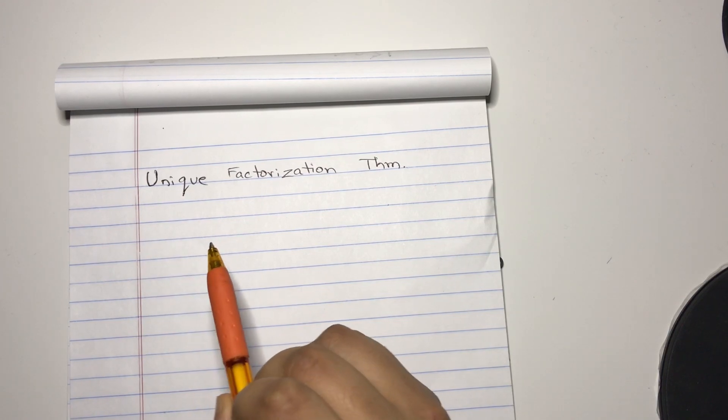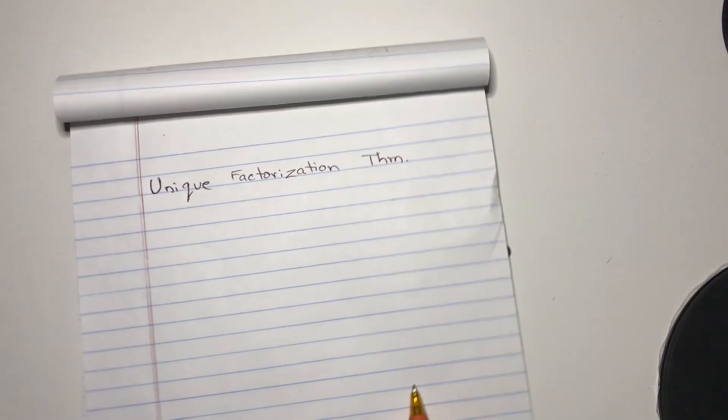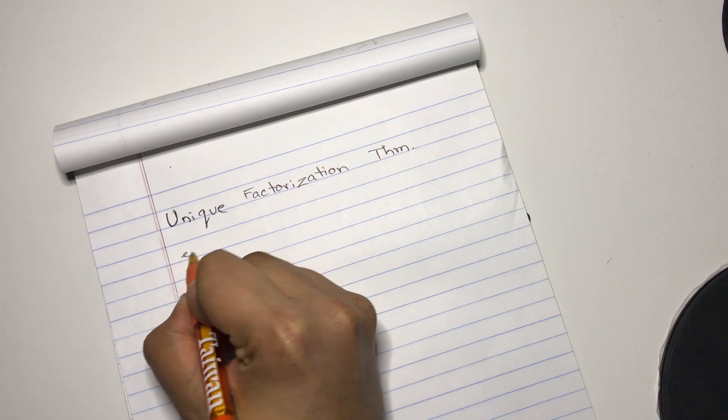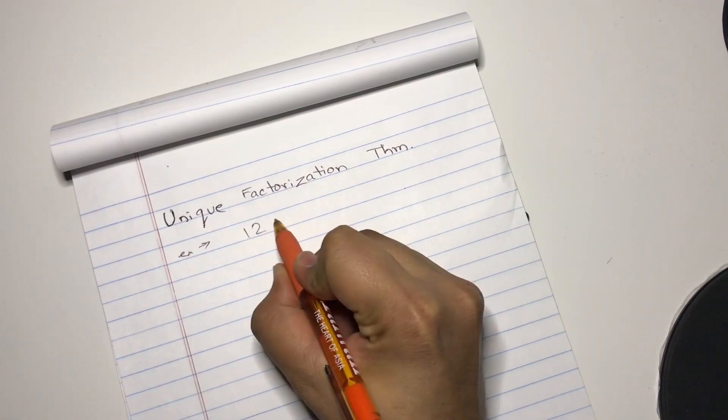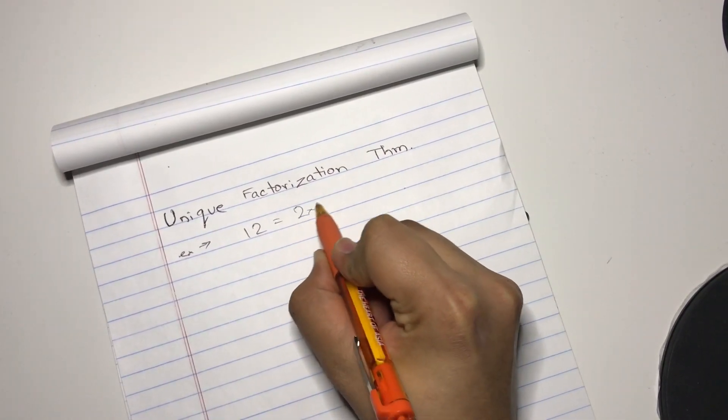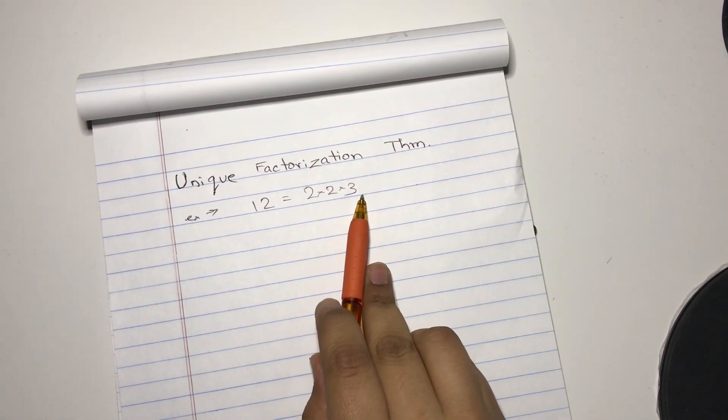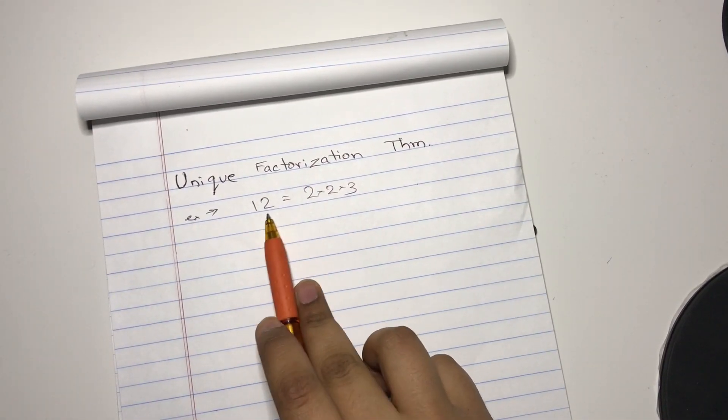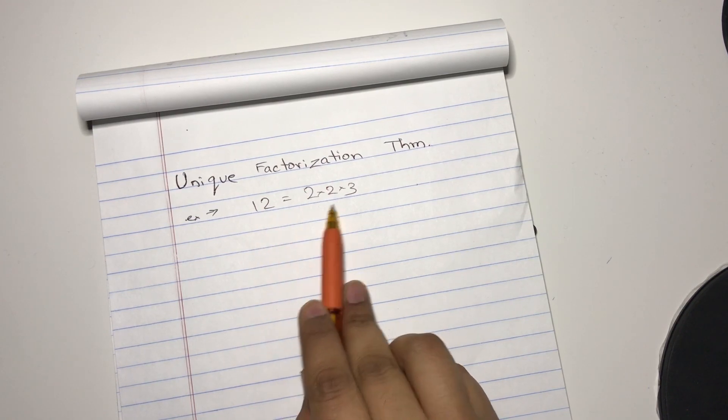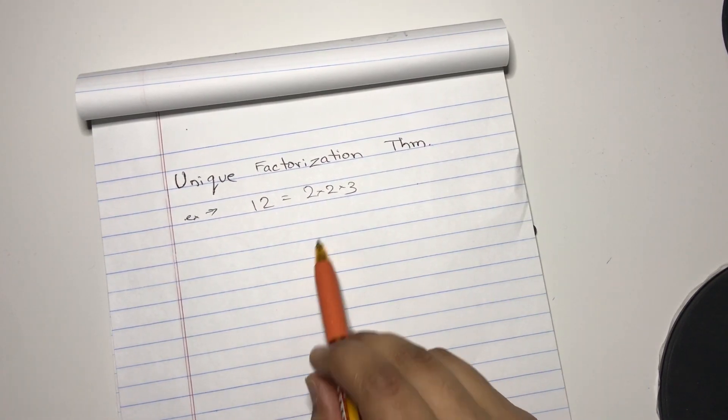But now we're going to prove that the product of the primes is unique for every number. So for example, what I'm trying to prove is, let's say 12 equals 2 times 2 times 3. And 2 times 2 times 3 can only equal 12, and 12 can only be expressed as 2 times 2 times 3 when it comes to prime factorization.